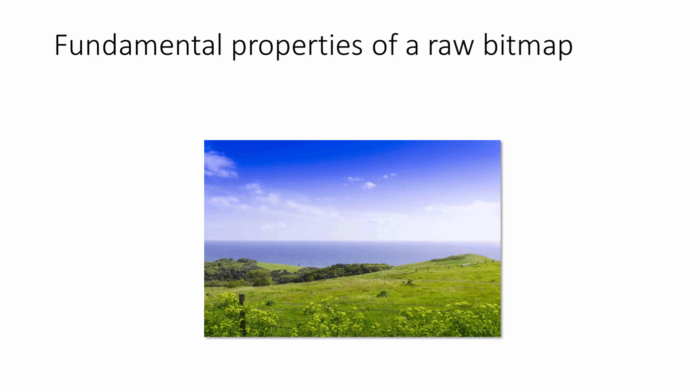In the previous video of this series, you saw that a bitmap is a rectangular grid of cells called pixels. A bitmap image is also known as a raster image.